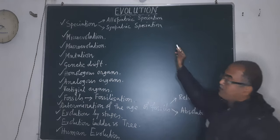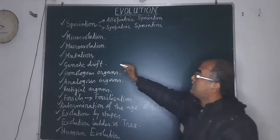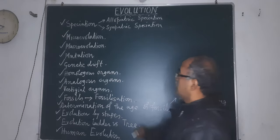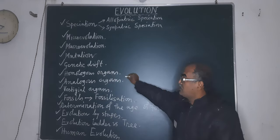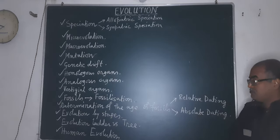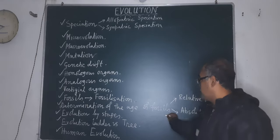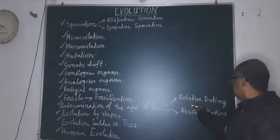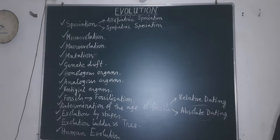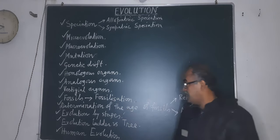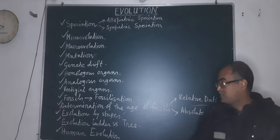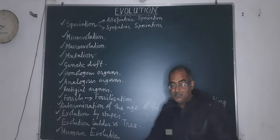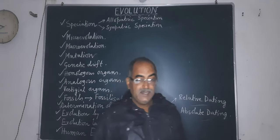Today the topics we will explain are: speciation — allopatric and sympatric. Then microevolution and macroevolution. Then mutation, which is a very important topic for evolution. Genetic drift, homologous organ, analogous organ, vestigial organ. Then fossil and fossilization — how fossilization occurs. Then determination of the age of the fossil, which is frequently asked in the exam. Relative dating and absolute dating — two types of dating. Then evolution by stages, evolution ladder versus evolution tree. Nowadays the evolution tree is more accepted than the evolution ladder. Then human evolution.